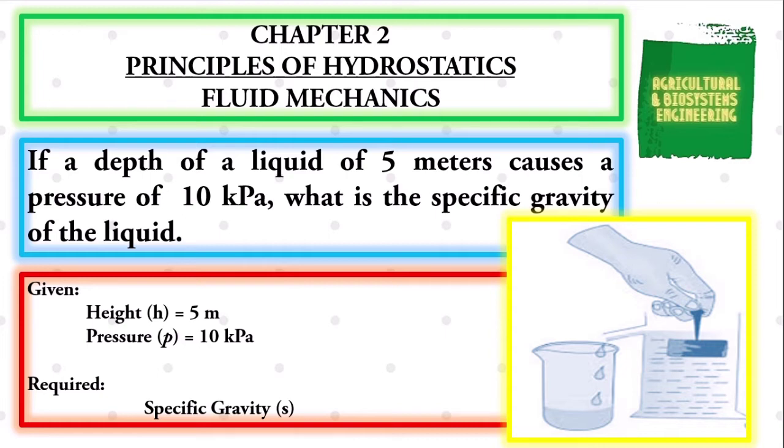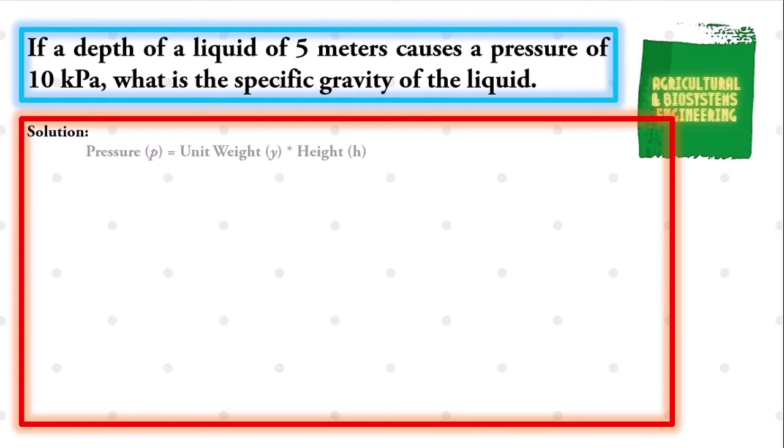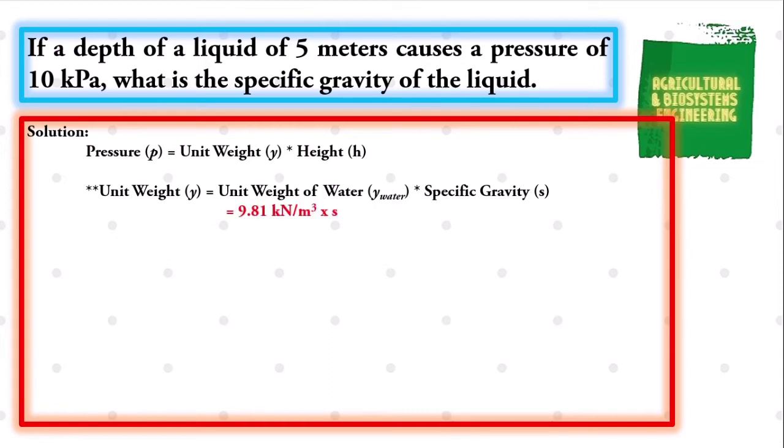We proceed with our solution. The formula that we are going to use is pressure equals unit weight times the height. However, we have to use the formula in solving the value for unit weight, which can be solved by multiplying the constant value of the unit weight of water times the specific gravity. We have unit weight equals 9.81 kilonewtons per cubic meter times the specific gravity.